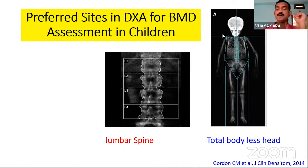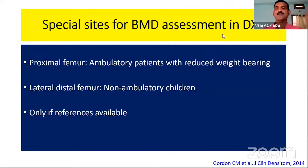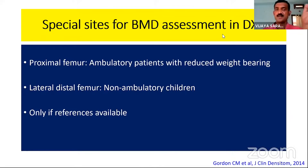The preferred DEXA sites in children are the lumbar spine (L1–L4) and, uniquely in the pediatric age group, total body less head (TBLH). Other sites such as femoral neck, proximal femur, distal one-third forearm, and lateral distal femur are increasingly used as reference data becomes available. In India, however, we are greatly limited by the lack of normative data for these additional parameters, though we have some data for lumbar spine BMD and proximal femur BMD.